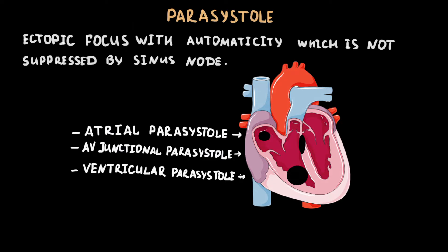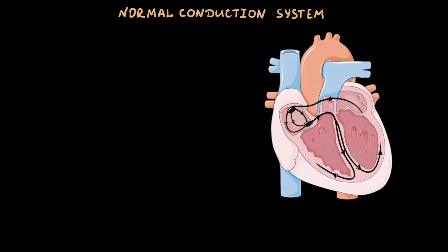Ventricular parasystole represents an independent ectopic ventricular focus that is not inhibited by the sinus node. As a result, we see two independent rhythms: normal rhythm and parasystolic rhythm. To explain ventricular parasystole, let's first remind ourselves how the conduction system normally works.